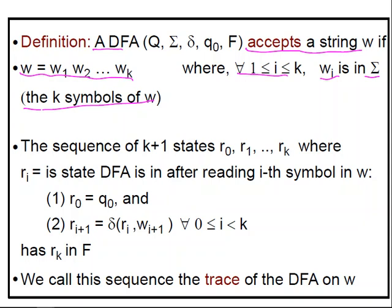So if you look at the sequence of k plus 1 states r0, r1, ..., rk, where ri is the state that the DFA is in after reading the i-th symbol in w. So r0 will be the start state.